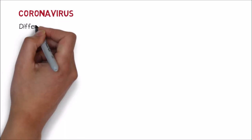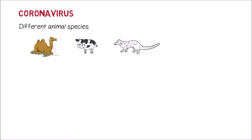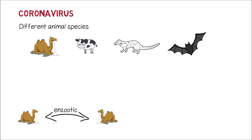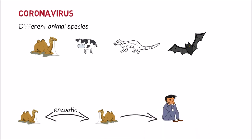Coronaviruses are a large group of viruses that are common in many different animal species, like camels, cattle, cats, and bats. In the beginning, the infections caused by this virus were confined to animals of specific species. Later, the virus found its way to human beings.